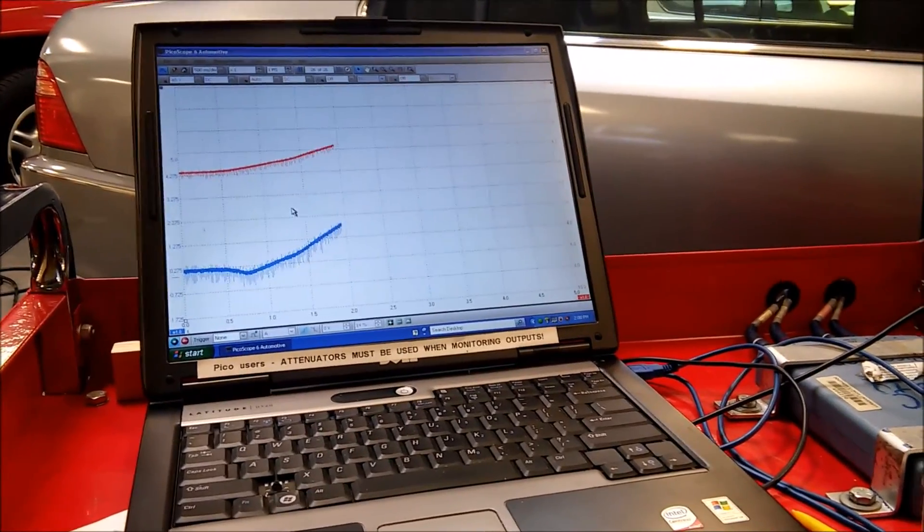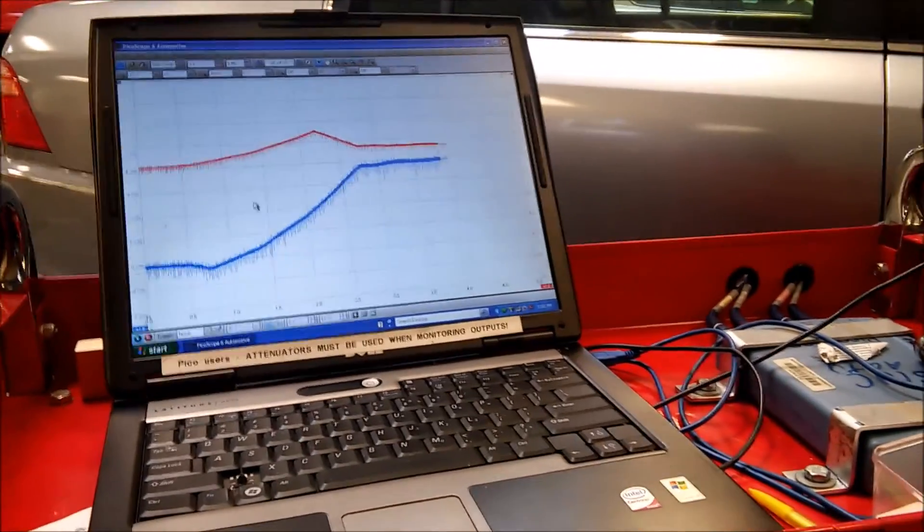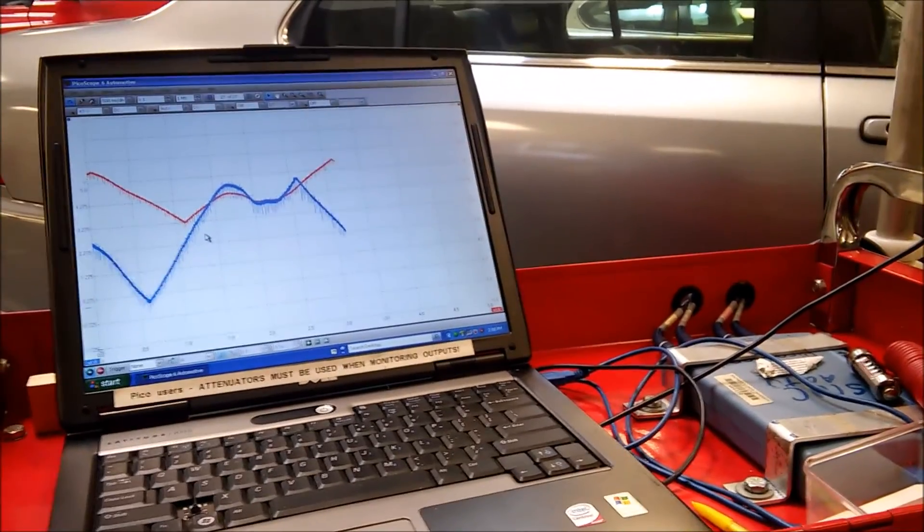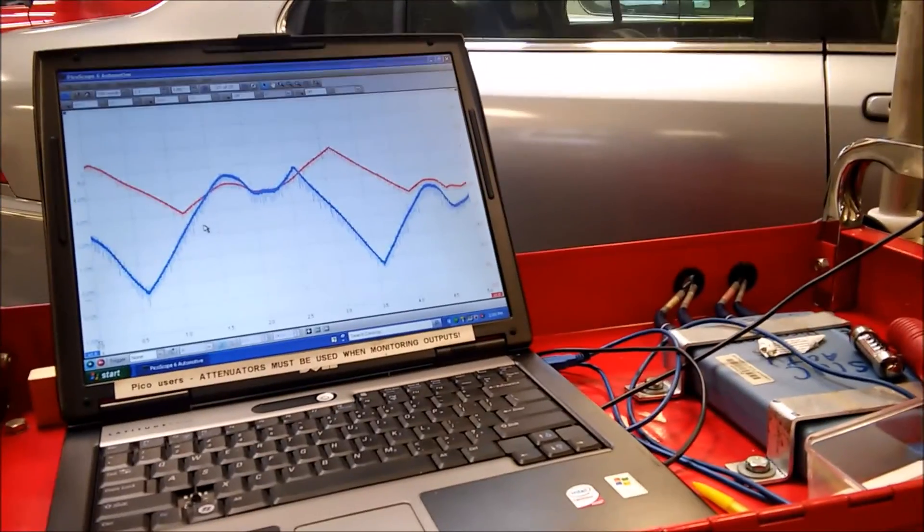Here it is in oscilloscope format. As you can see, the voltages go up and down as I'm moving the wheel to one side. It moves from five volts to zero volts.